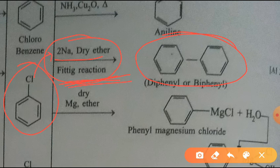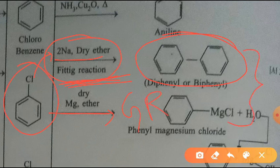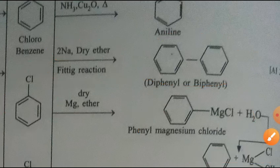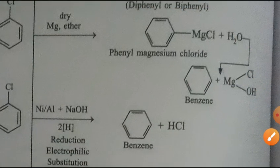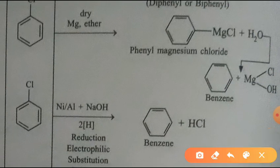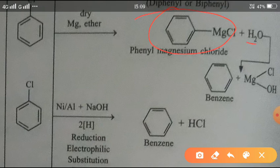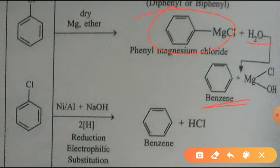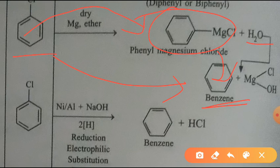If you react chlorobenzene with magnesium and dry ether, it gives phenyl magnesium chloride — a Grignard reagent. So these are the reactions of chlorobenzene with metals, sodium and magnesium. Once you have phenyl magnesium chloride, reacting it with water gives benzene. So to convert chlorobenzene to benzene: first form the Grignard reagent, then react with water.